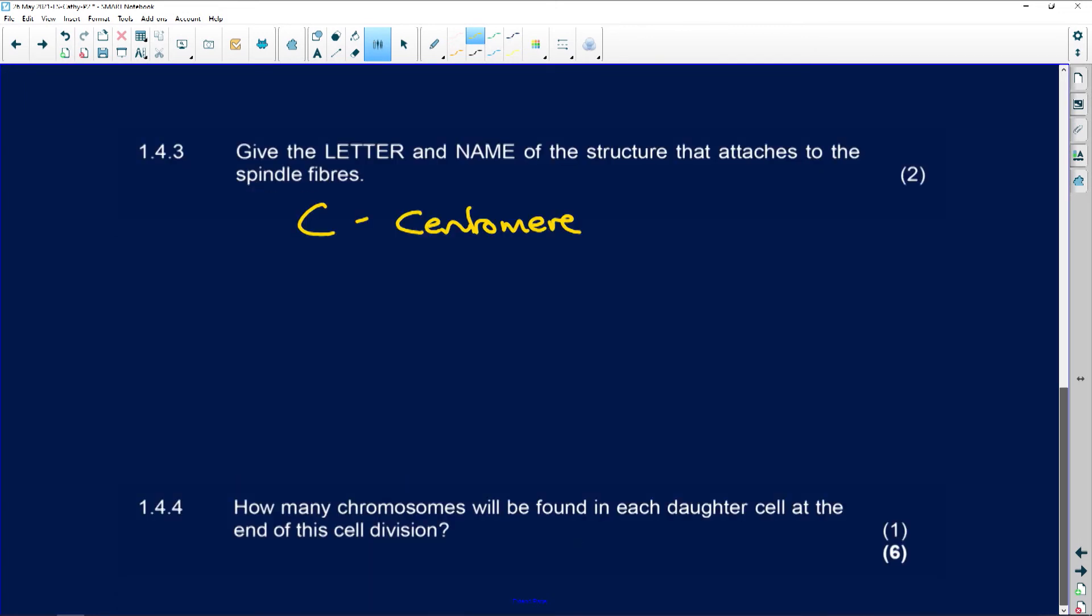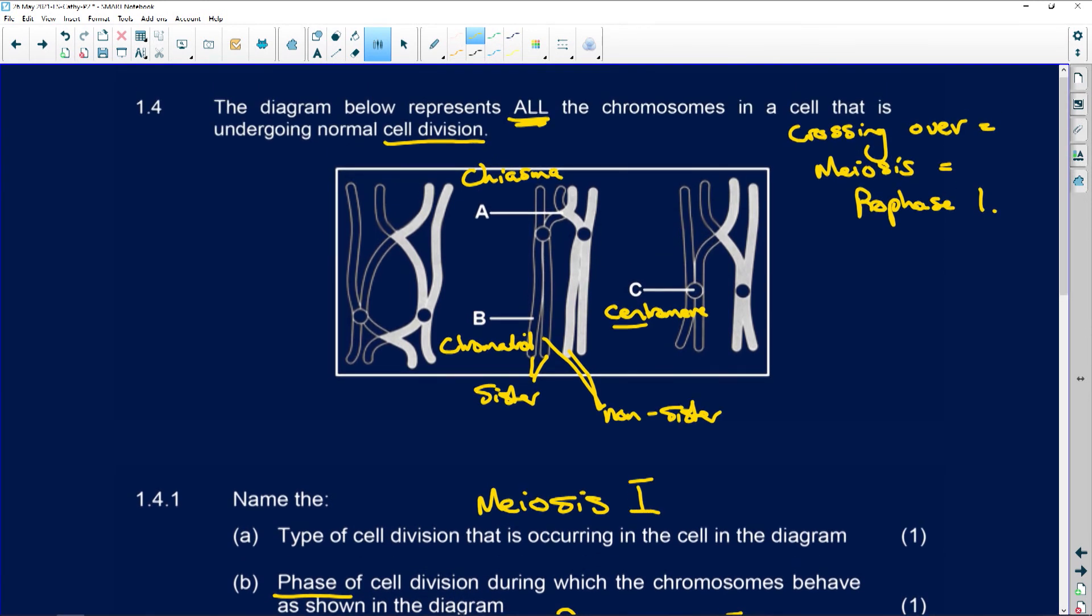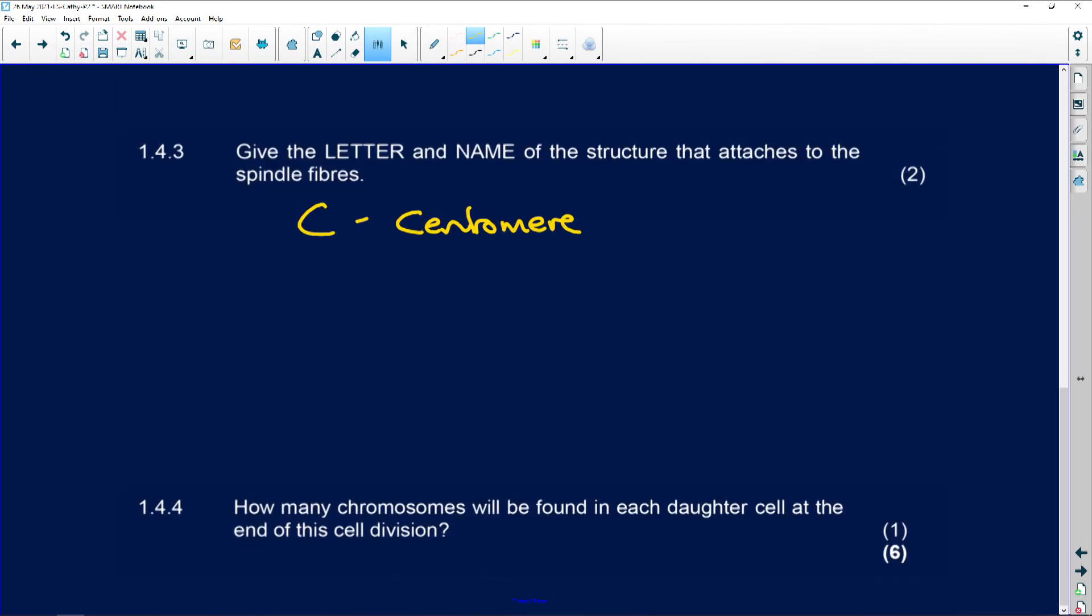Okay. How many chromosomes will be found in each daughter cell at the end of cell division? So all we have to do is look at how many. You've got six chromosomes. And at the end of meiosis, that's two sets. So two sets equals six. So one set is going to be three. That's it. End of story. Three chromosomes. You can actually write chromosomes. How incredibly easy was that?